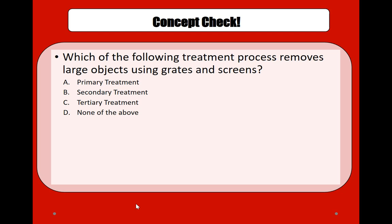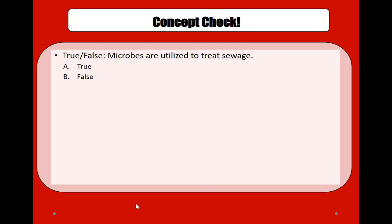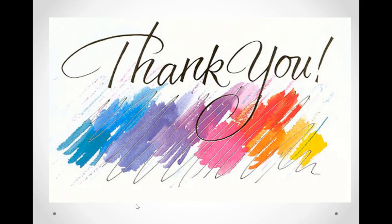Let's quickly do a concept check. Which of the following treatment processes removes large objects using grids and screens? The answer is primary treatment — true. And: microbes are utilized to treat sewage — true.